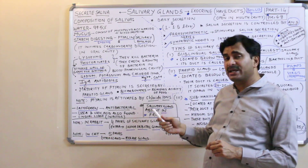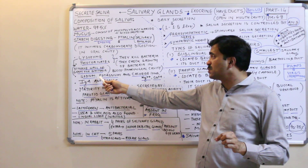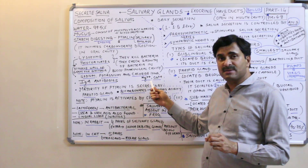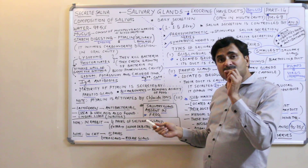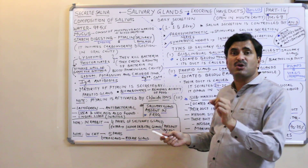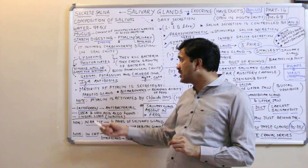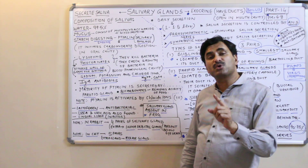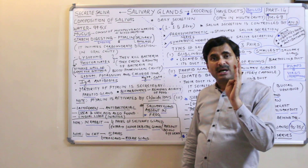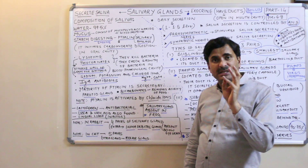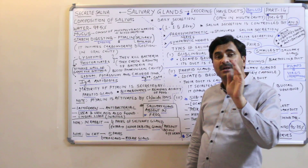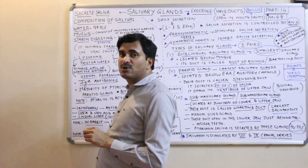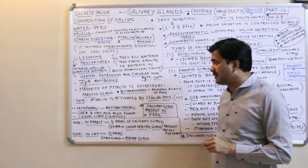Our saliva also contains certain ions such as sodium ions, potassium ions, chloride ions, magnesium ions, and calcium ions. Additionally, saliva consists of a specific type of antibody known as IgA. Antibodies are of five types: IgA, IgD, IgE, IgG, and IgM. The antibody found in saliva is IgA type.